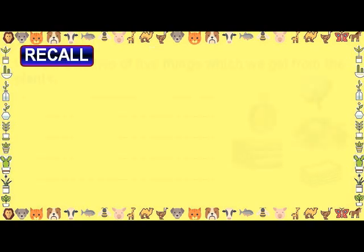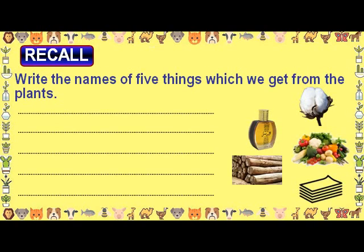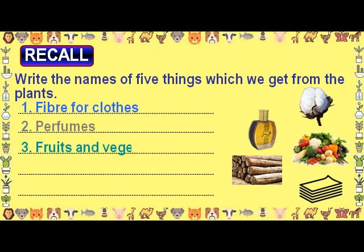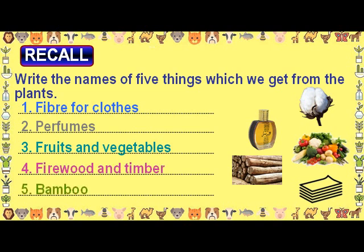Recall: write the names of 5 things which we get from plants. Fiber for clothes, perfumes, fruits and vegetables, firewood and timber, and bamboo pulp for making paper.